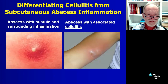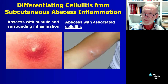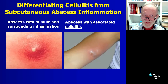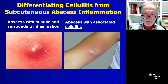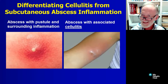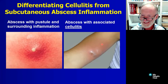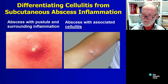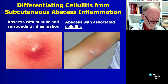Differentiating cellulitis from subcutaneous abscess inflammation: here we have that pustule with inflammation around it — no clearly demarked zone — whereas cellulitis tends to be deeper with not such a clear zone. Erythema there will be, but not a clear, clear zone. It's deeper and not so clear, and that will be very, very tender. If it's still growing, of course there's trouble as well.